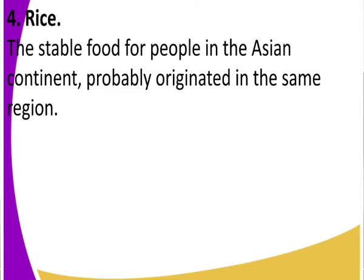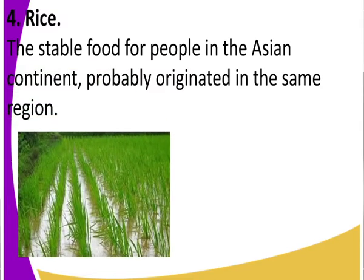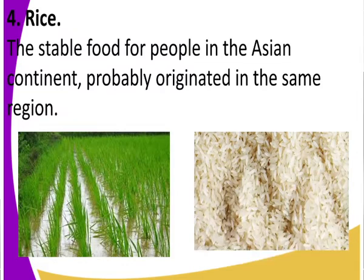Another domesticated crop is rice. Rice is the staple food of the Asian continent, which tells us that its origin can be dated back to Asia. You can see a rice plantation there. Rice is grown in wet conditions — in swampy, flooded areas, as you can see it is flooded with water.